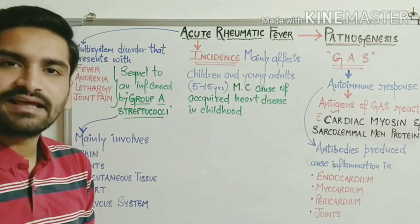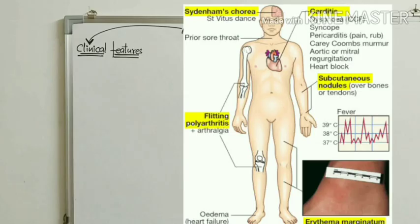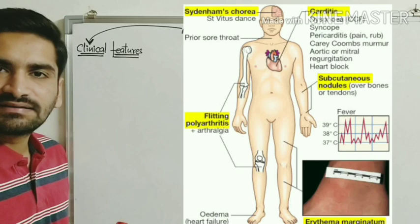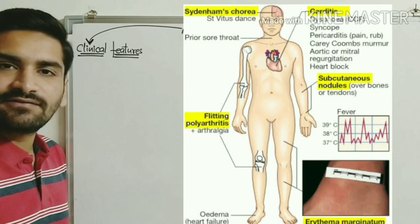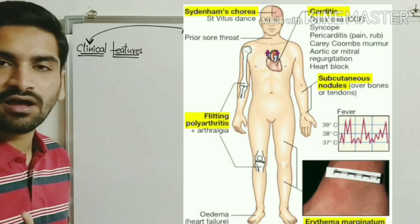Moving on to the clinical features of acute rheumatic fever. There are five striking features: carditis, polyarthritis, subcutaneous nodules, erythema marginatum, and Sydenham's chorea.